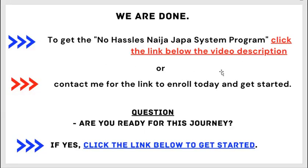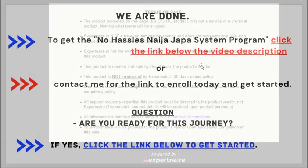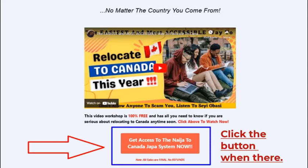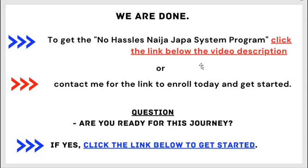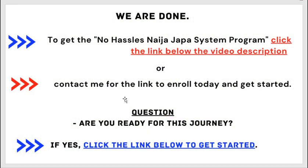Number five: how to get a job and accommodation without stress in Canada. To get the No Hassle Nigeria Japa System program, click the link below the video description or contact me for the link to enroll today. When you click the link it will take you to a website called Espartner, as this program is hosted on that platform — the only legitimate place you can buy this program and get every support and guidance you need.